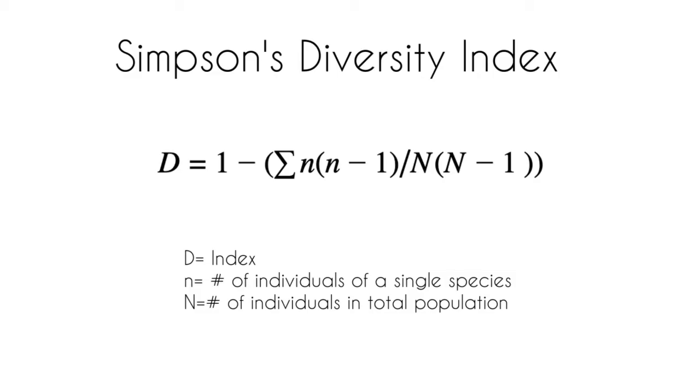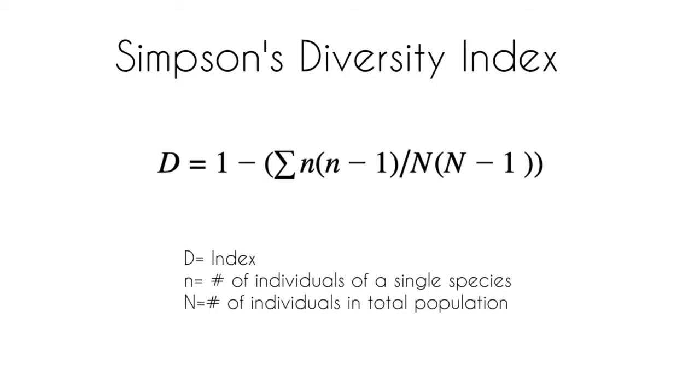Our sample problem is going to contain five species. If you want to find the Simpson's Index for this population, the first step is going to be finding the value of the numerator.